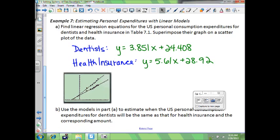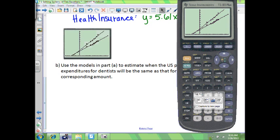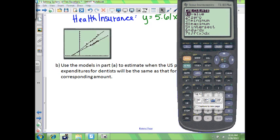Now for part B, it says use the models in part A to estimate when the U.S. personal consumption expenditures for dentists will be the same as that for health insurance and the corresponding amount. So we want to find the intersection point. You want to press second trace, go down to number 5 for intersection.